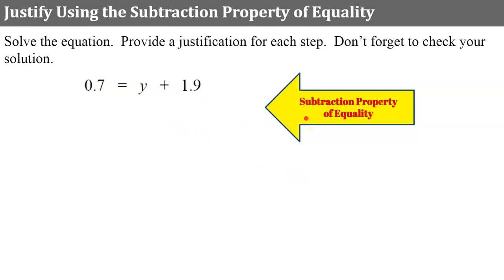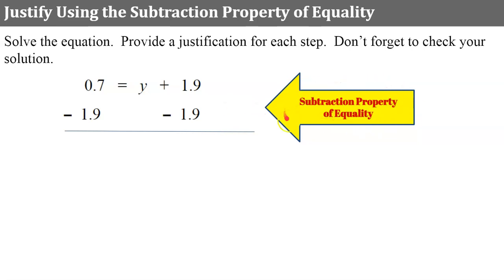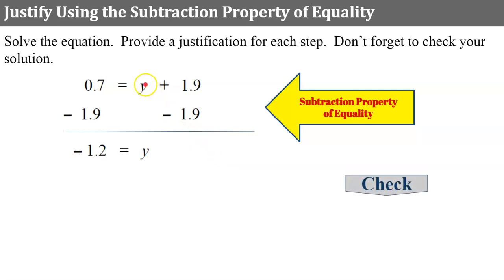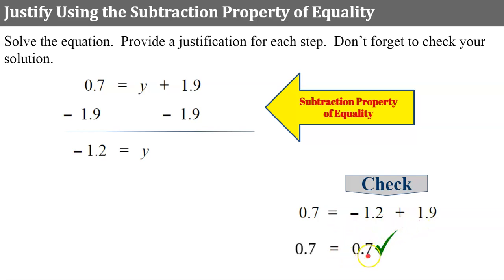Now let's justify using the subtraction property of equality. We're going to solve, justify, and check. The variable expression is on the right side of the equal sign, and that's okay. I identify what is happening to the variable — it's being added by 1.9. The inverse of add 1.9 is to subtract 1.9, so the subtraction property of equality is the justification. Simplifying, 0.7 subtract 1.9 is negative 1.2, and this is a zero pair leaving y. This is an equivalent equation to the original. Checking by replacing y with negative 1.2: 0.7 needs to equal negative 1.2 plus 1.9, and negative 1.2 plus 1.9 is 0.7, so it checks.